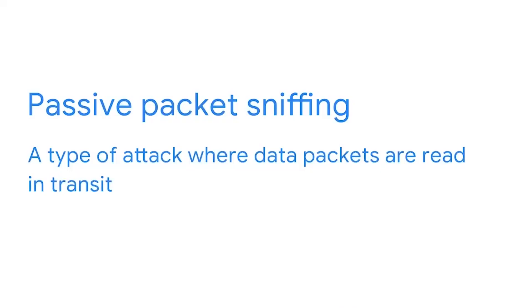Attackers can use software applications or a hardware device to look into data packets. Malicious actors can access a network packet with a packet sniffer and make changes to the data, such as altering a recipient's bank account number. Packet sniffing can be passive or active. Passive packet sniffing is a type of attack where data packets are read in transit. Since all traffic on a network is visible to any host on the hub, malicious actors can view all information going in and out of the device they are targeting — comparable to a postal delivery person maliciously reading somebody's mail.